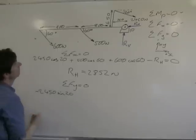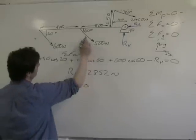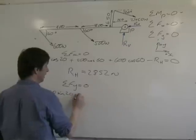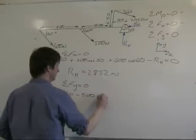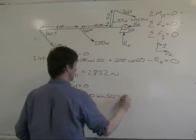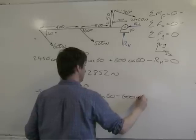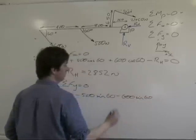500 sin 60, again acting down, so it's negative. And 600 sin 60, again acting down, again negative.